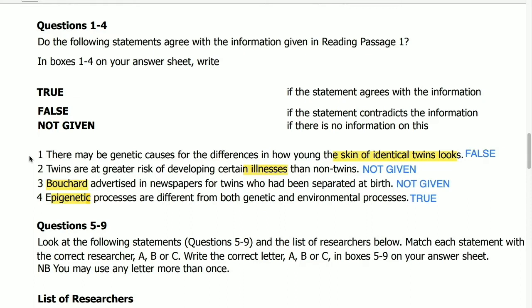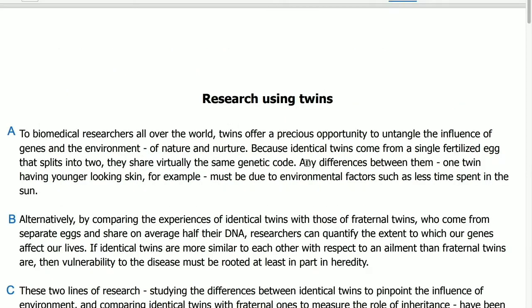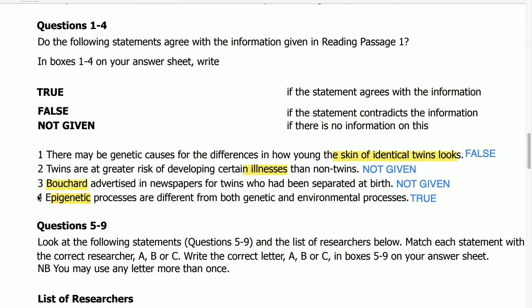Statement 1: there may be genetic causes for the difference in how young the skin of identical twins looks. Its answer is in paragraph A, last line: any difference between them — one twin having younger-looking skin, for example — must be due to environmental factors, such as less time spent in the sun. Its answer is FALSE, because the statement says genetic causes are responsible, but the passage says it must be due to environmental factors.